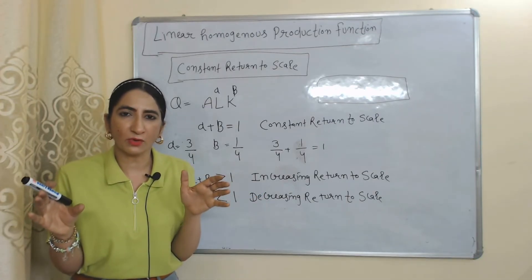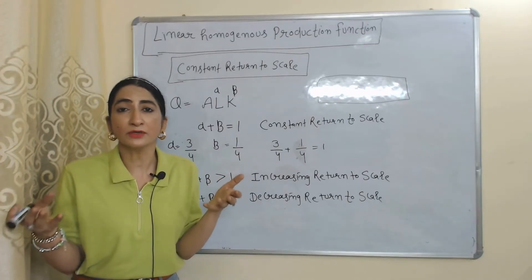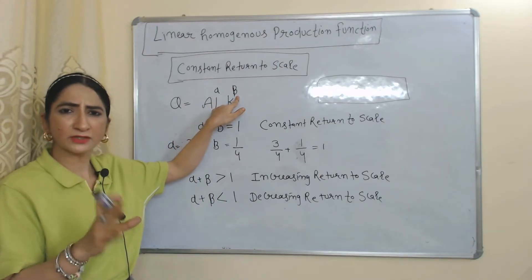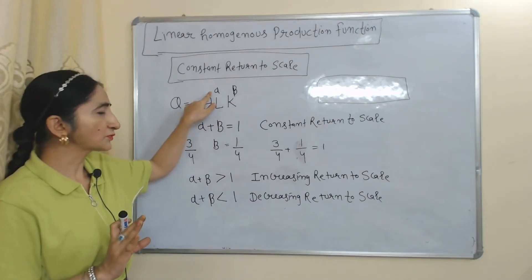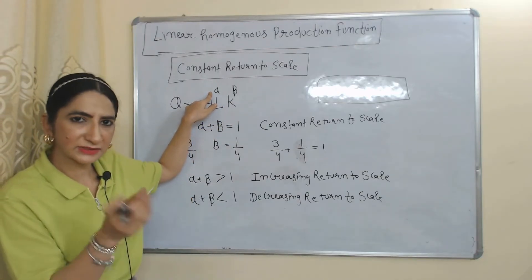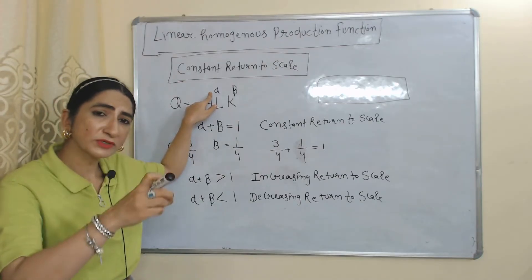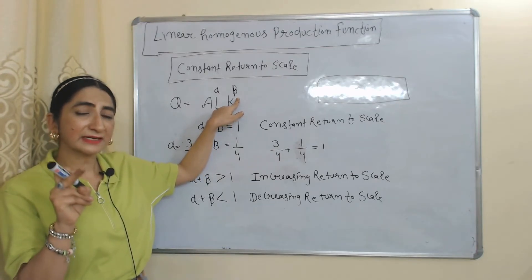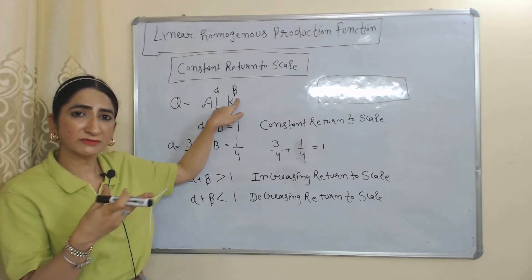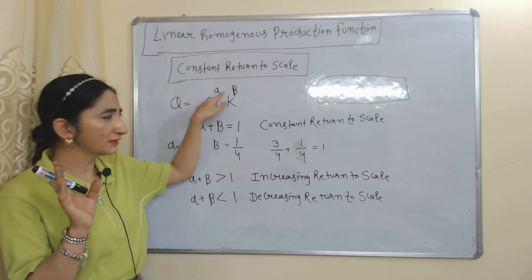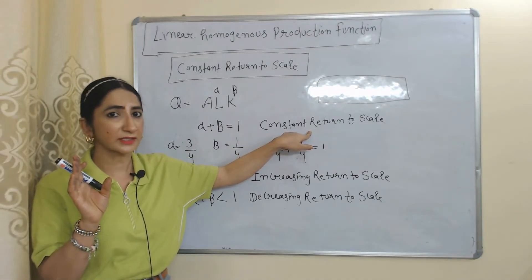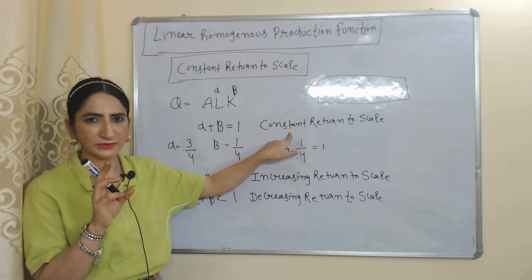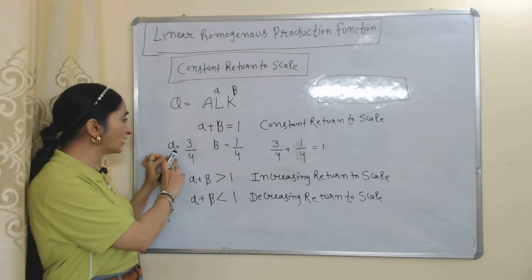How can we know we are receiving constant return to scale? With the values of alpha and beta, we can determine the return to scale. Alpha is the output elasticity of labor and beta is the output elasticity of capital. If alpha plus beta equals 1, we are getting constant return to scale.